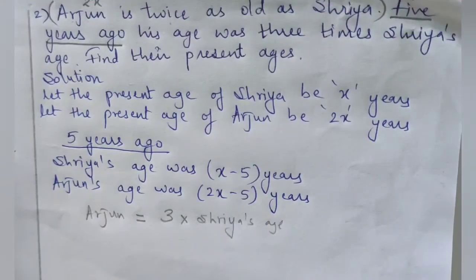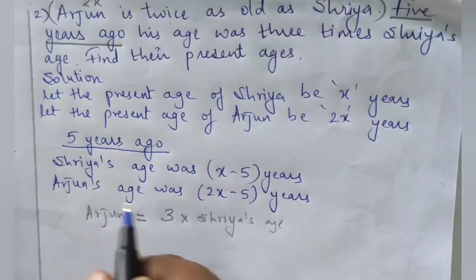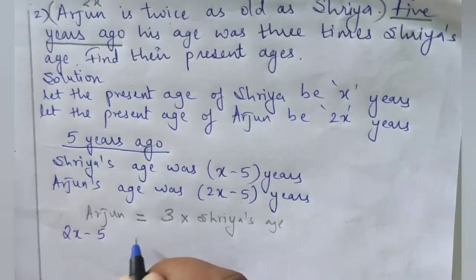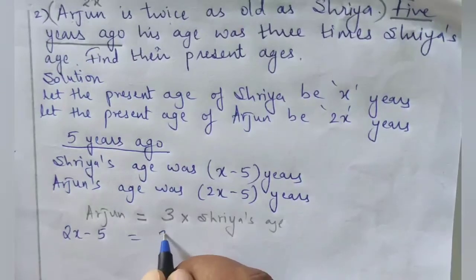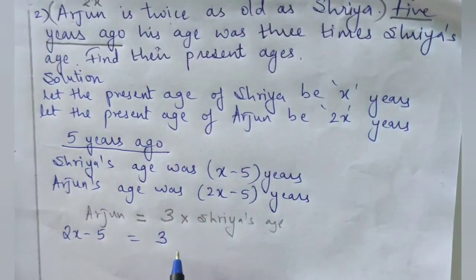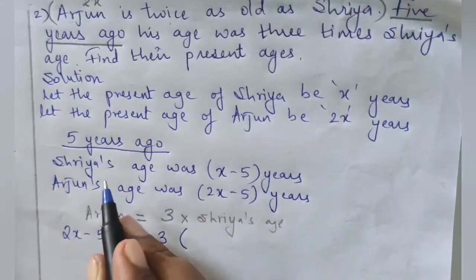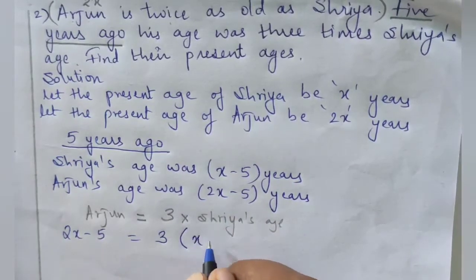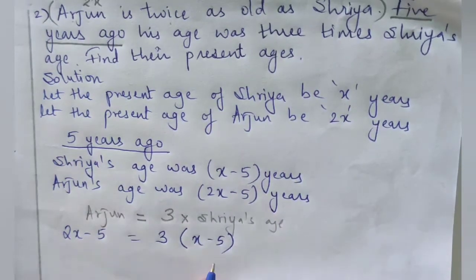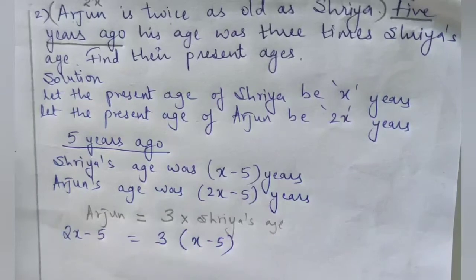Five years ago Arjun's age was 2x − 5, and 3 times Shriya's age was 3(x − 5). So the equation is: 2x − 5 = 3(x − 5). From this statement we get a linear equation, which we will now solve to find the value of x.